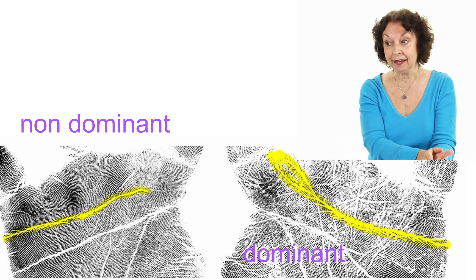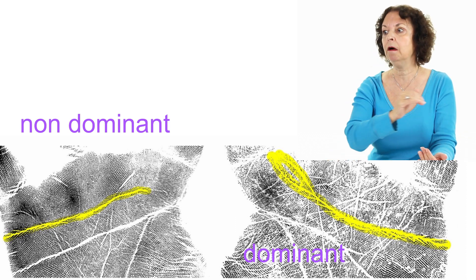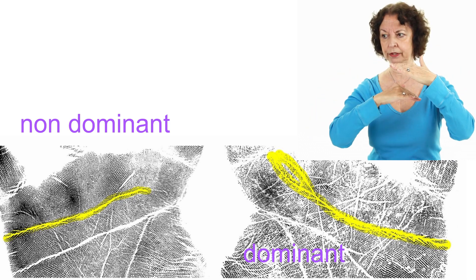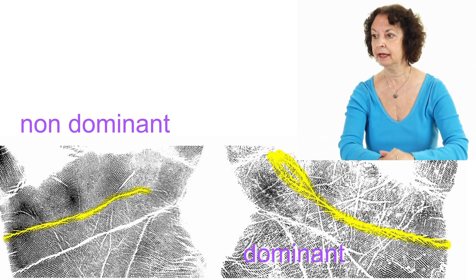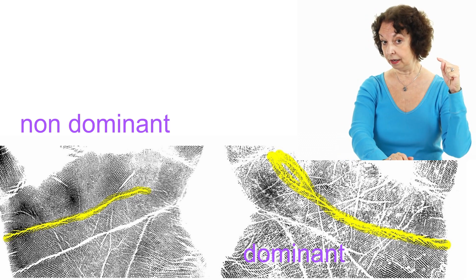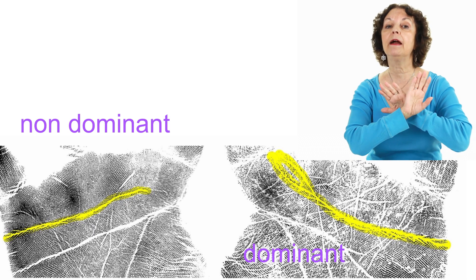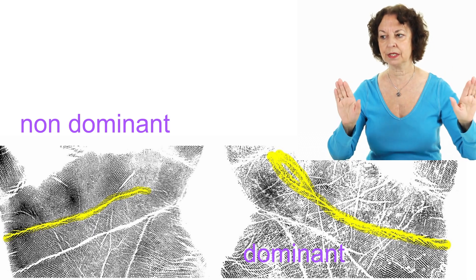On the non-dominant hand, it's very long, but totally straight. You see both lines of the quadrangles are very straight. The heart line has a tendency to go down, and there are no wisdom signs.